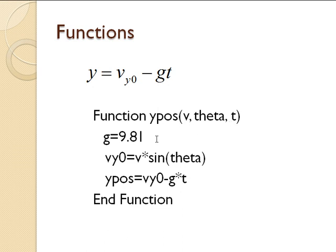So then I define the gravitational acceleration here in SI units. I calculate my initial velocity in the y direction from the initial velocity total and the angle. And then I calculate my position, the vertical position, as Vy0 minus g times t. So the key here is that I have to have a variable in here that matches the name of the function. And whatever that variable is, when the function is completed, gets sent back to Excel and dumped in the cell or wherever it was called from.